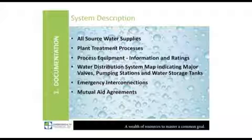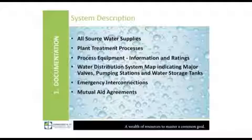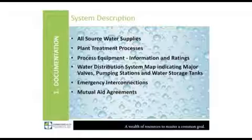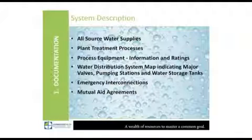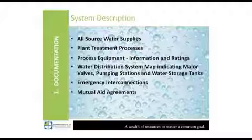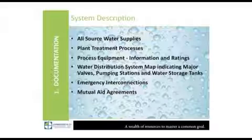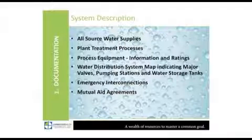Document everything to do with your public water supply: raw water supply sources, your well information. You should include the depth of the well, the diameter and length of the screen, and the depth of the pump set. For all your plant processes, you should have detailed information, most of which will be provided by the manufacturer. Distribution system mapping — we'll get into that a little bit later.